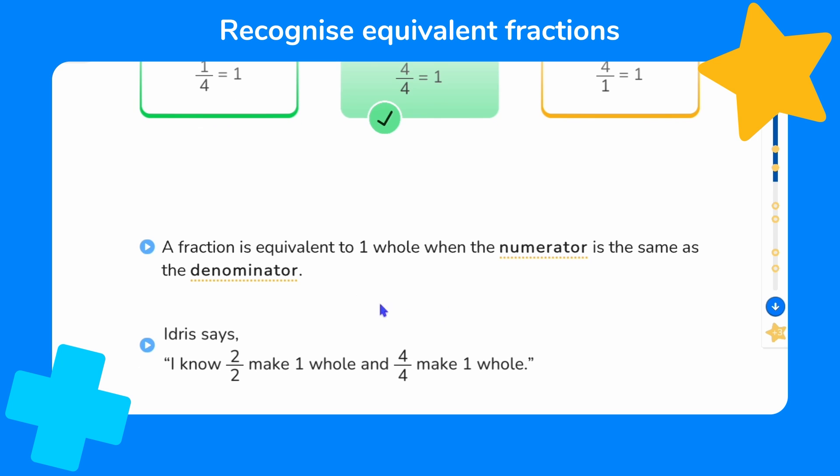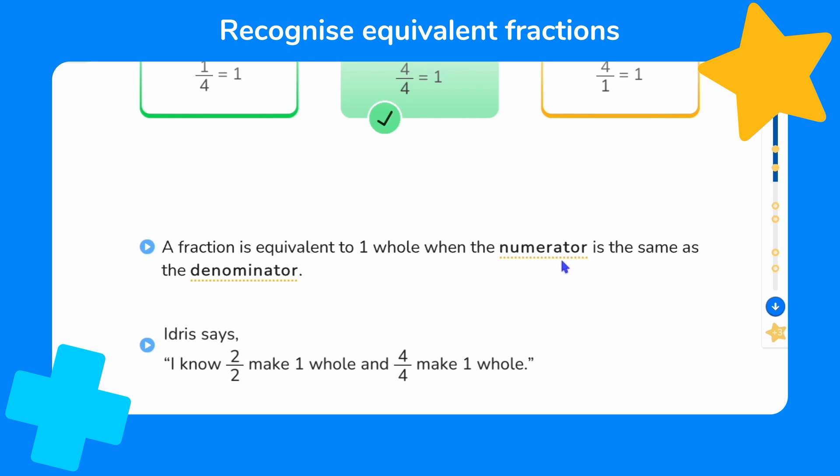A fraction is equivalent to one whole when the numerator is the same as the denominator. Do you remember what those words mean? The numerator is the number above the line. And the denominator is the number below the line. Idris says I know that two halves make one whole and four quarters make one whole. The numerator and denominator is the same in both two halves and four quarters. Why is that?